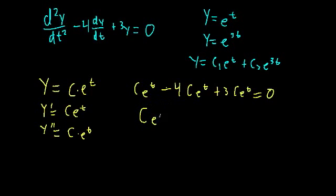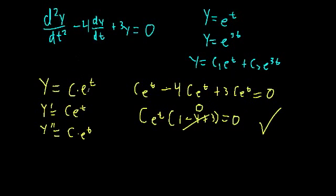Every term has a c times e to the t factor, so we can factor that out: c times e to the t times (1 minus 4 plus 3), which should equal 0. And we know that 1 minus 4 plus 3 is 0, so we get 0 equals 0 — it holds. So c times e to the t is also a solution, which means multiplying a solution by any constant still gives a solution. Pi times e to the t satisfies it, a million times e to the t satisfies it, 0.001 times e to the t — they're all solutions.